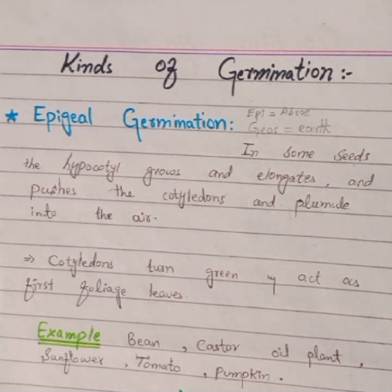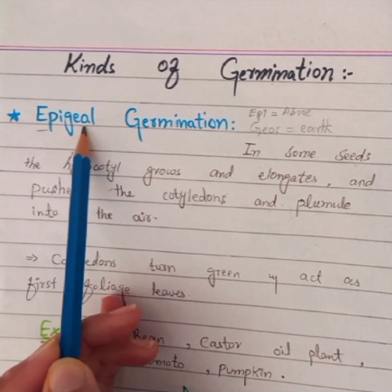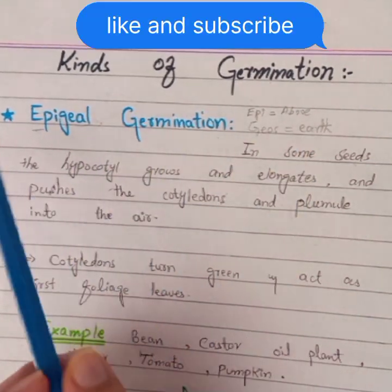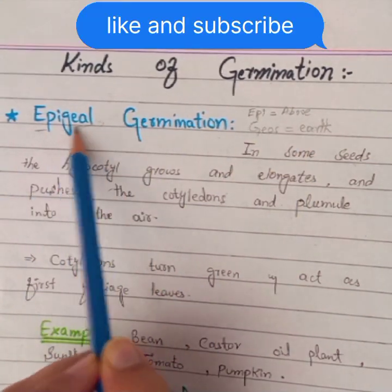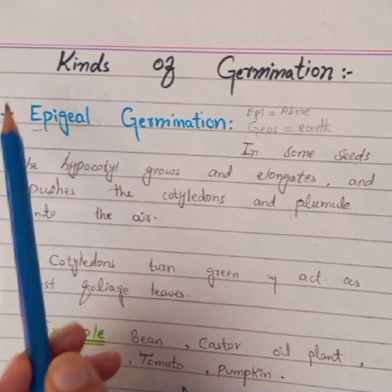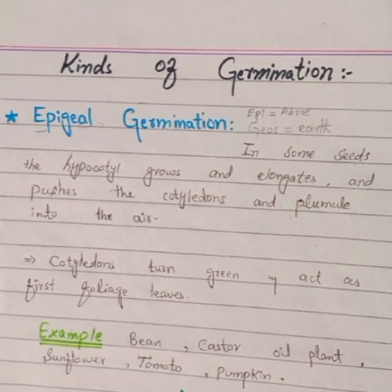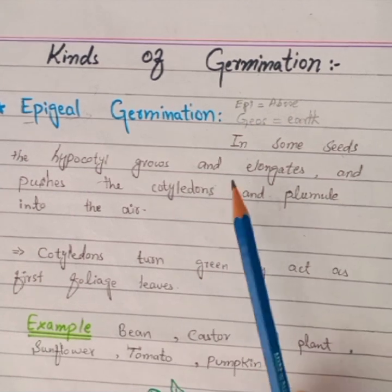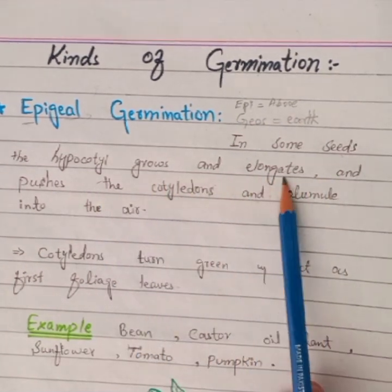First, I'm going to talk about epigeal germination, in which 'epi' means above and 'geo' refers to the earth. So here the cotyledon will move above the earth — that's why it is known as epigeal germination. In some seeds, the hypocotyl grows and elongates and pushes the cotyledon and plumule into the air.